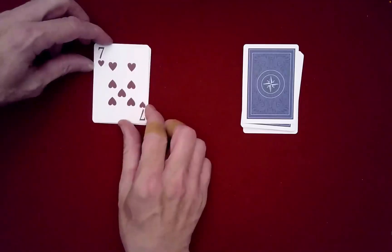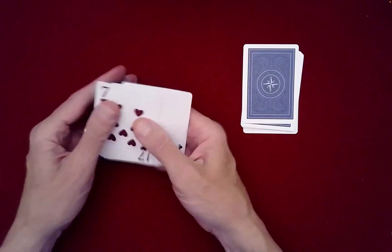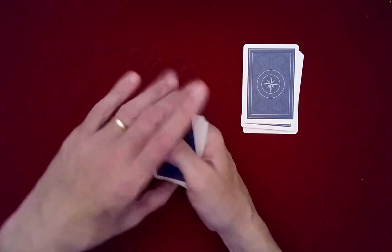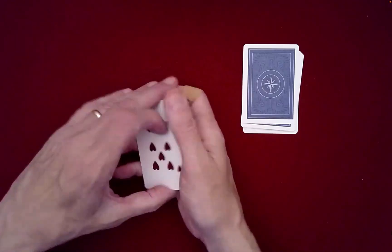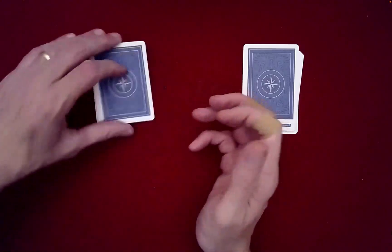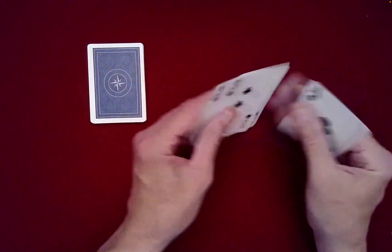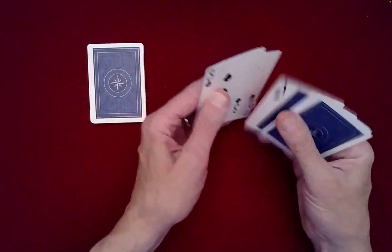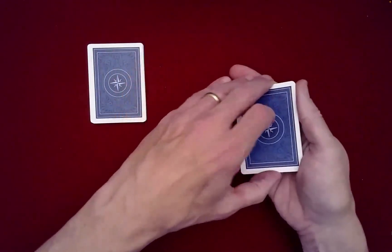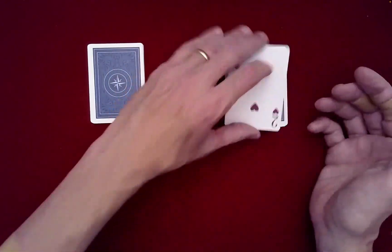So I have these two piles of eight cards. And then we can Charlier Shuffle these cards. Or if you don't know how to do that, you can just do a random cut. That's fine. Charlier Shuffle is just a stronger shuffle. Or you can just cut the cards randomly. That would be just fine.